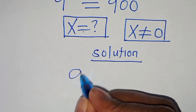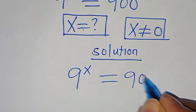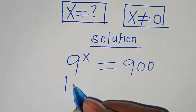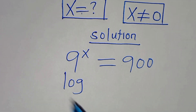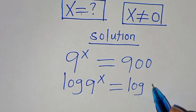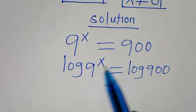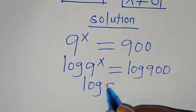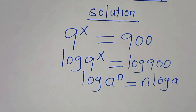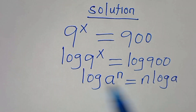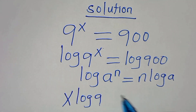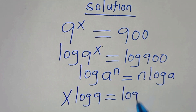So we have 9 to the power of x, this is equal to 900. To solve for x here, we introduce logarithm on both sides, so that now we have log 9 to the power of x, this is equal to log 900. Now, log 9 to the power of x is in the form of log a to the power of n, which can be expressed as n·log a. Applying this power property of logarithms, log 9 to the power of x becomes x·log 9, and this is equal to log 900.